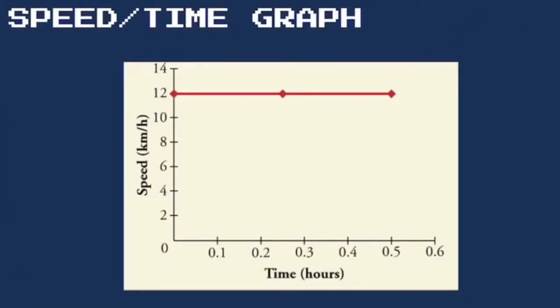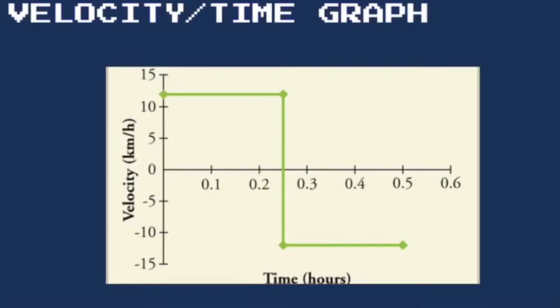This is the speed-time graph of Matthias' journey — a straight line at 12 kilometers per hour on both his journey to and from school. His velocity-time graph shows velocity at 12 kilometers per hour in the first 15 minutes, as displacement was in the positive range. Due to the U-turn at the 15-minute mark, his displacement became negative, so his velocity on the way back is negative 12 kilometers per hour.